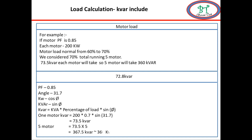Each motor contributes 73.5 kVAR. For 5 motors, we multiply by 5 to get 367.5 kVAR, so we take approximately 360 kVAR. Now we go to choosing the capacitor bank value. The capacitor bank should be in the range of 350 to 500 kVAR. You can fix the capacitor bank in manual mode — capacitor banks have auto and manual modes. At a fixed 350 kVAR, we can set it to manual mode if we have a constant load on the motor.